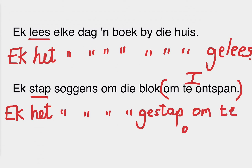Om te ontspan. What sometimes happens is I get ek het sochens om die blok om te ontspan gestap — but of course verb 2 does not pass the infinitief. So there you have the basic het and ge rules about verlede tijd. If you want to see what to do when you start with a time word, that will be in a separate video.